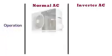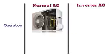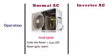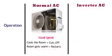In case of normal air conditioners, the compressor runs at a fixed speed, which means it cools the room to the desired temperature and cuts off until the room gets warm again, then restarts.